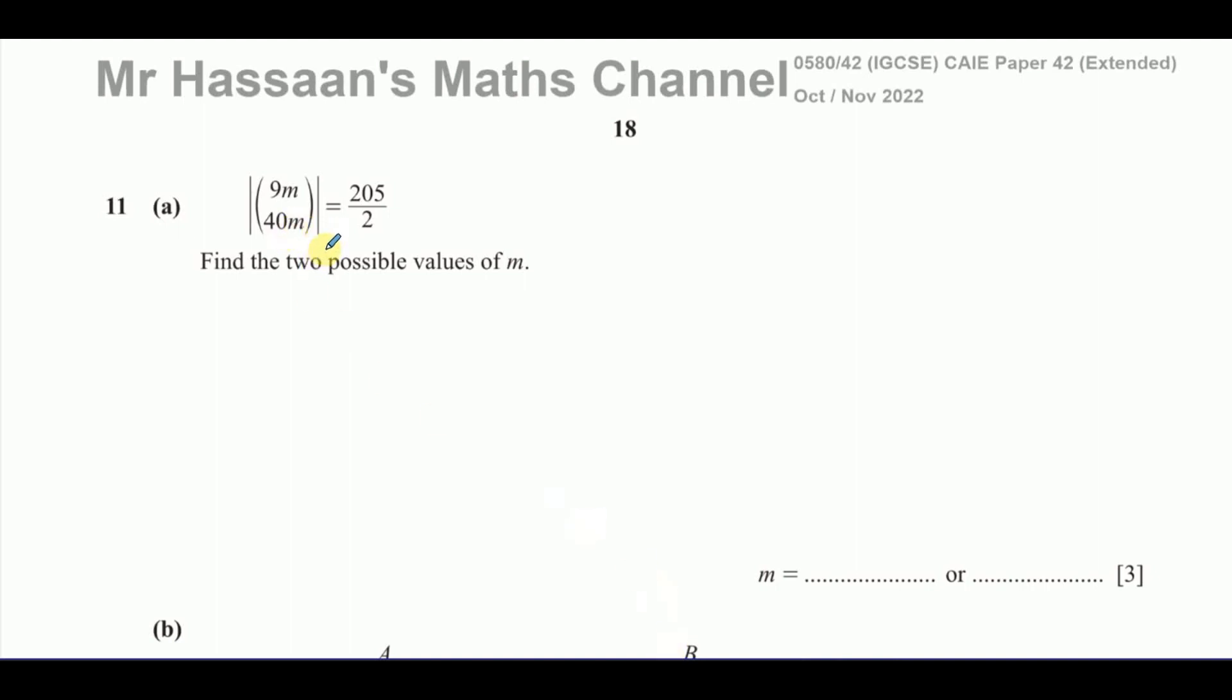Welcome back, this is Mr. Hassan's Maths Channel. I'm answering question number 11 from the October-November 2022 paper variant 2, the IGCSE Cambridge 0580 exam. And this question is all about vectors. Part A tells us it's got this funny symbol here, like these two lines and a vector inside it equals 205 over 2. And you've got the components of the vector 9m and 40m. It says find the two possible values of m.